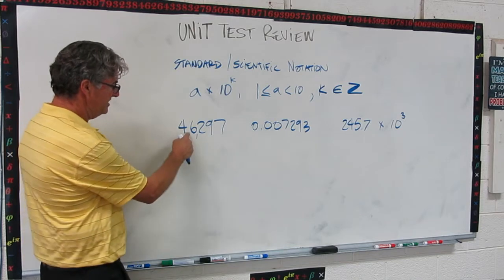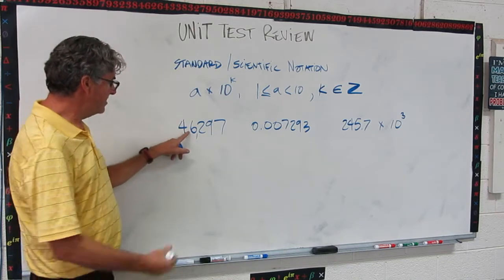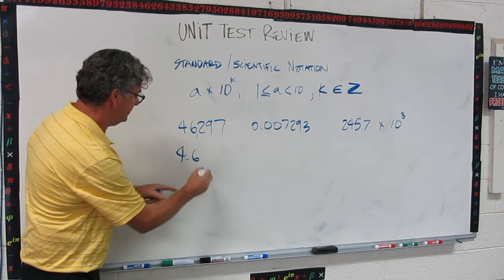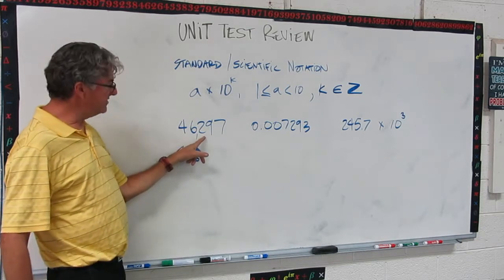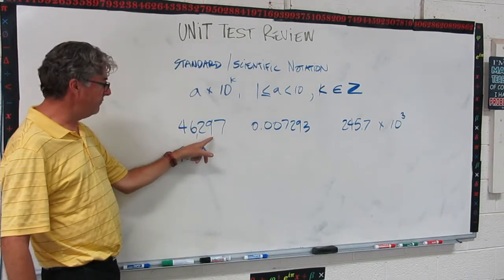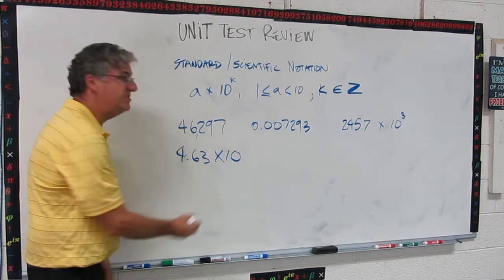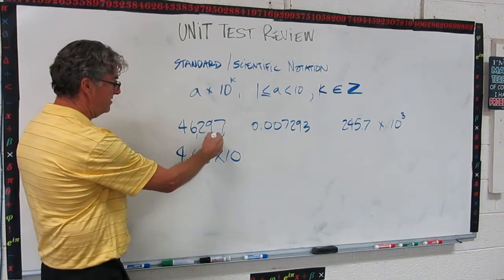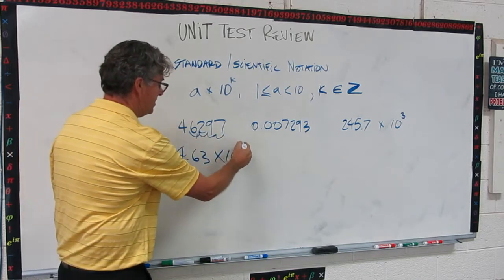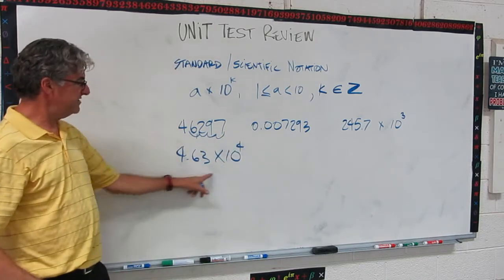This one, we need to get here. We need to have our decimal there, 4.6. And we need to have three sig figs, so this 9 is going to go away, and we're going to round that to a 3. So that's going to be 4.63 times 10 to something. And then to figure that out, we just go 1, 2, 3, 4. So that's times 10 to the 4. So that's that one.